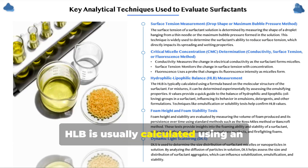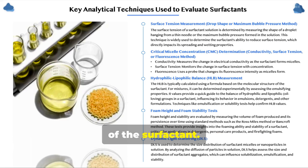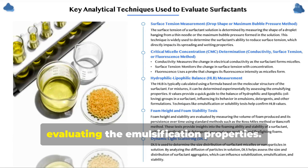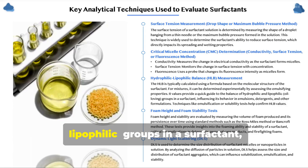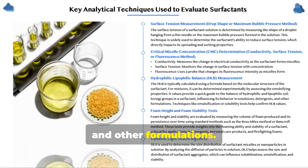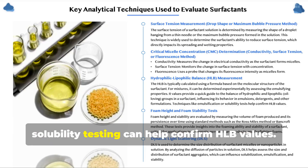HLB is usually calculated using an equation based on the molecular structure of the surfactant. For mixtures, it can be determined experimentally by evaluating emulsification properties. The HLB value provides a quick guide to the balance of hydrophilic and lipophilic groups in a surfactant, affecting its behavior in emulsions, detergents, and other formulations. Techniques such as emulsification or solubility testing can help confirm HLB values.